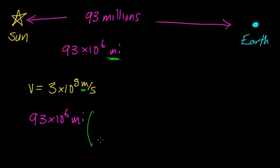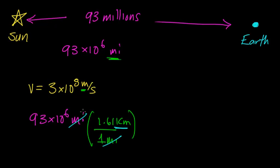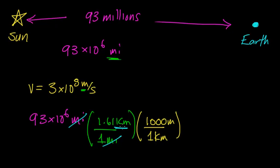You should know that one mile is equal to 1.61 kilometers, and this unit of miles cancels out with the miles in our original expression. Now we need to convert kilometers to meters. One kilometer is equal to exactly 1,000 meters, so the unit of kilometers cancels out, leaving us with units of meters. When we do this multiplication out, we get about 1.5 times 10 to the 11th meters.